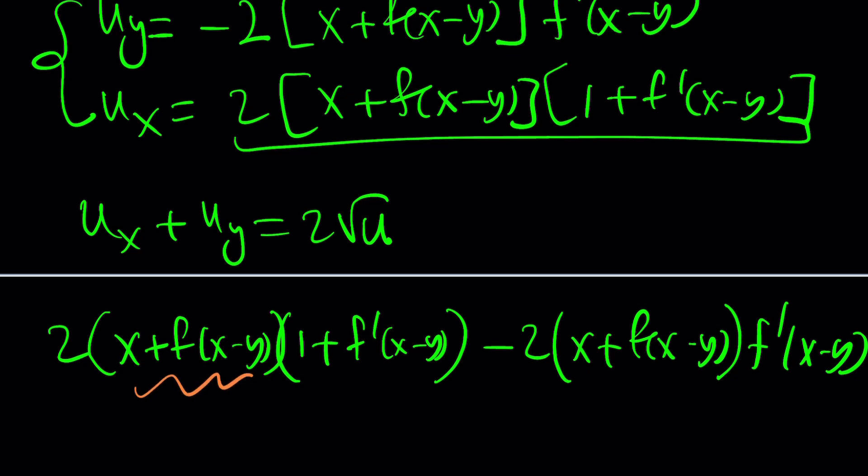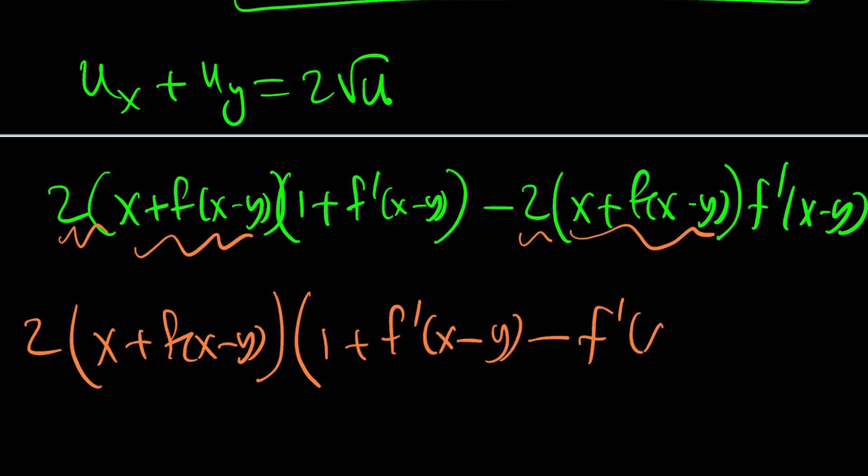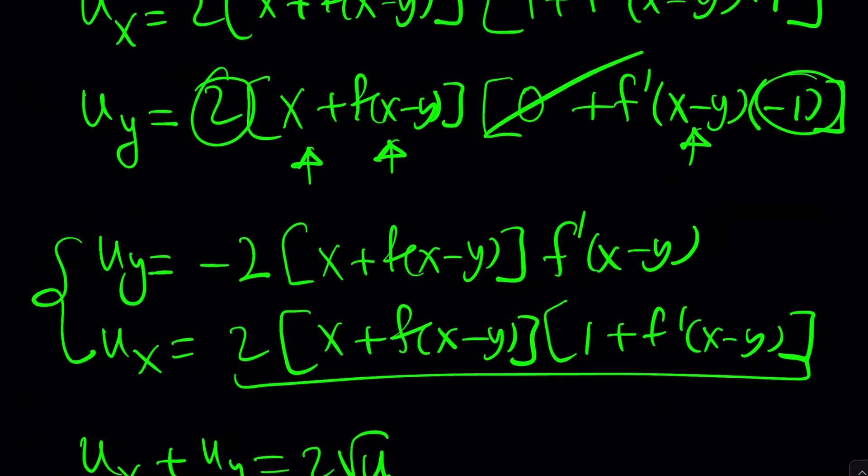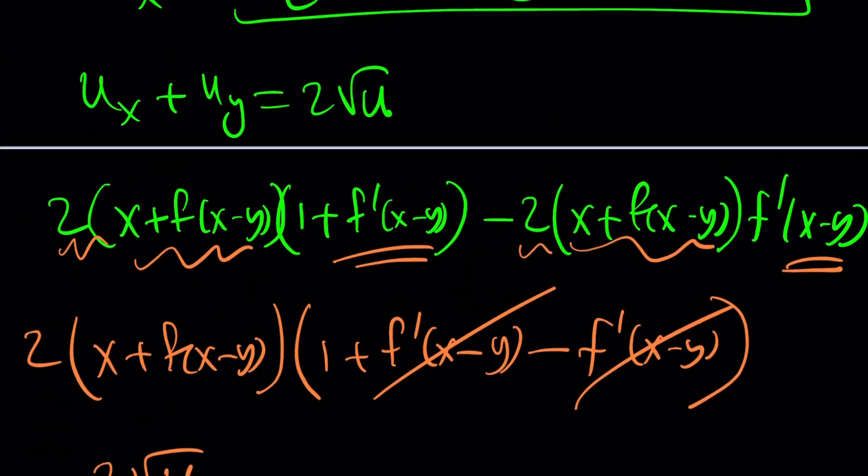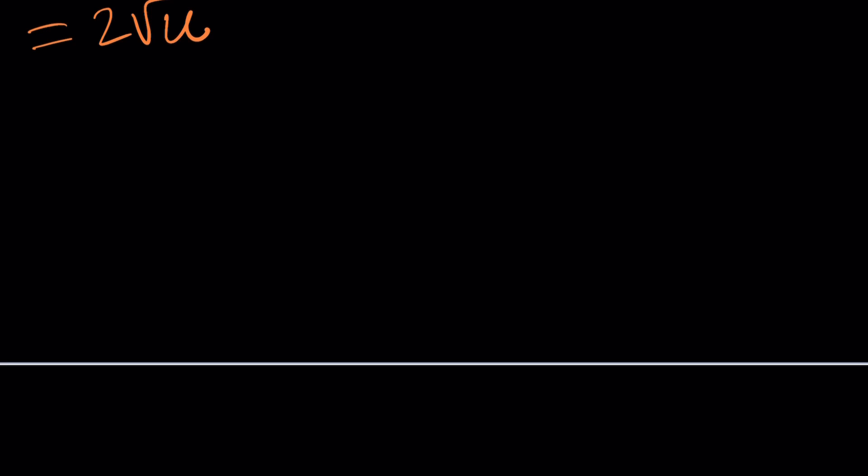Now, we have a common factor. Here, this and this, actually, along with the two, we can factor that out. 2 times x plus f of x minus y multiplied by 1 plus f prime of x minus y minus f prime of x minus y. That comes from here, by the way, right? And then, these two are going to cancel out. Uh-oh, what did we get? 2 times x plus f of x minus y. But if you remember, that was the same thing as square root of u. So, now, this is indeed 2 root u. And if it's your birthday, happy birthday to you again. But, as you can see, our solution works in the general case.